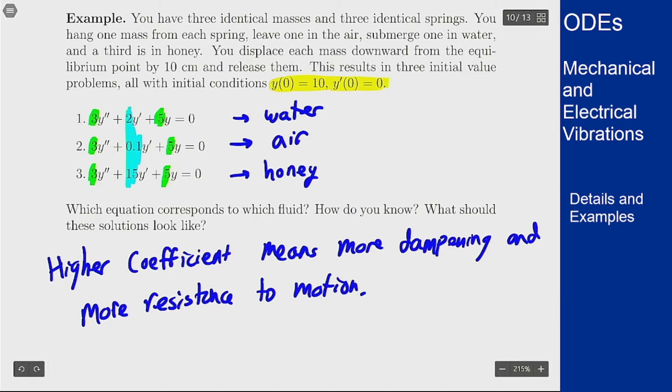And we know this because of how the higher coefficient relates to resistance to motion, which these should be more viscous and more resistant to motion for the mass on the spring. Now what do these look like?